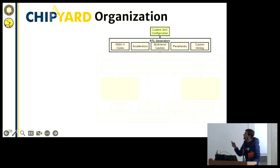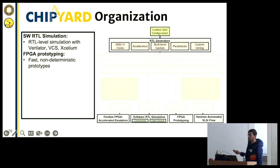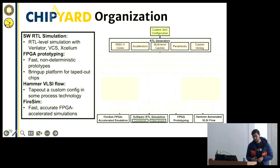Now let's talk about the backends. There are several available. The first is software RTL simulation — you do RTL-level simulation with something like Verilator, VCS, or Xcelium, all supported inside ChipYard with a plug-and-play interface. You have FPGA prototyping — if you want quick prototyping, dump your RTL onto an FPGA and make sure you can boot Linux. We actually use this for chip bring-up. You have Hammer, discussed by Nayiri in another talk, to take things out to a particular PDK. And you have FireSim for accelerated simulations with FPGAs.